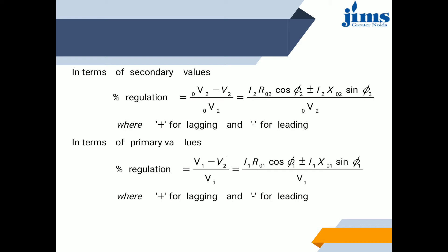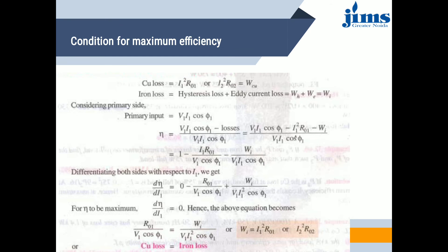The next topic is transformer efficiency and the condition for maximum efficiency. The rated capacity of a transformer is defined as the product of rated voltage and full load rated current on the output side. The power output depends upon the power factor of the load. The efficiency of a transformer, like that of any other apparatus, is defined as the ratio of useful power output to the input power, both measured in the same units, either in watts or kilowatts. Transformer efficiency = output / input = output / (output + losses). Input = output + iron loss + copper loss.